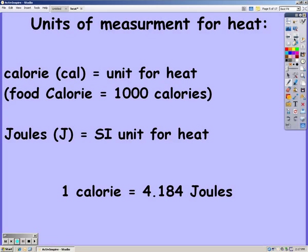The measurements of heat are calories and joules. Calories are represented C-A-L, and this isn't the food calorie. Food calories have a capital C and those are a thousand regular calories. And then joules is J. Make sure you know that one calorie is equal to 4.184 joules. Make sure you know the conversion.